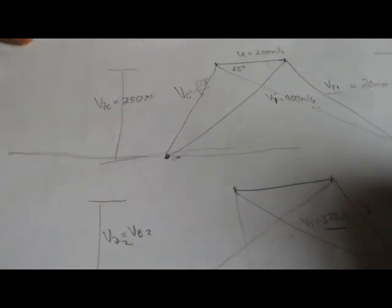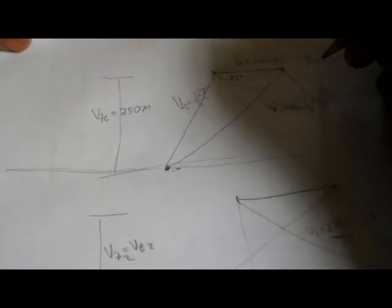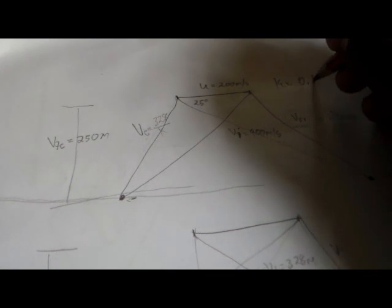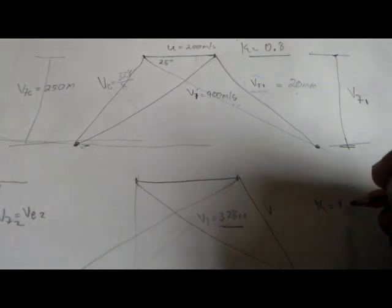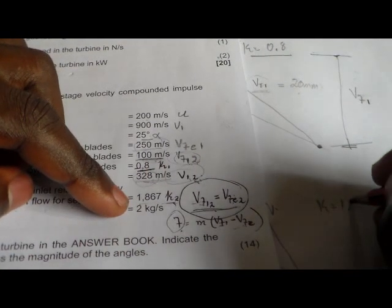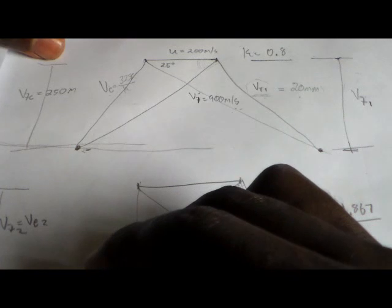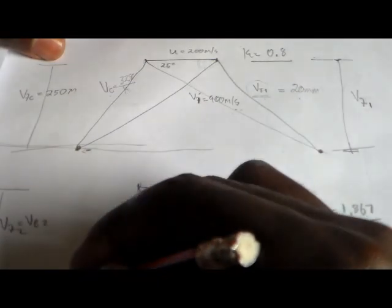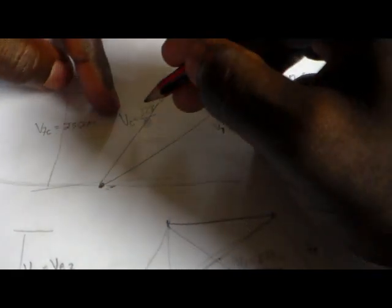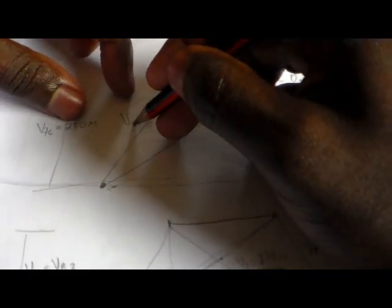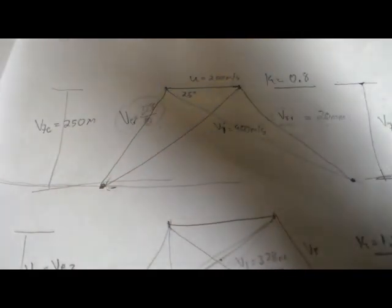The coefficient of friction is not the same on both rows — on the first row it's 0.8, and on the second row we are given a different one. Use it to get this side of the component, and then close it. On this side you don't use the same K, because these two Ks are not equal. You get this value when you draw this one and just close it like that.